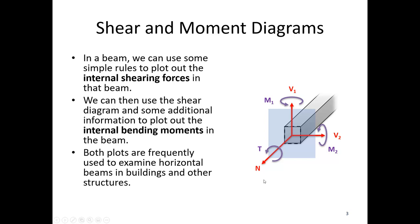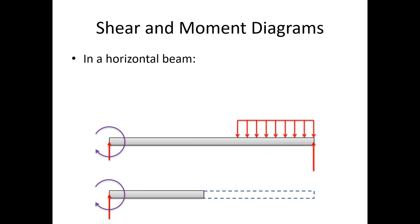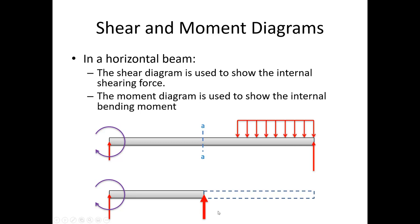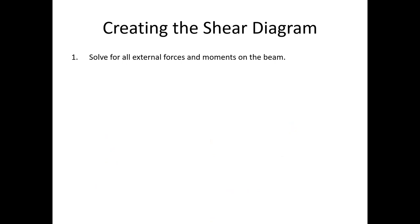Both of these plots are used to examine horizontal beams in buildings and other structures — anywhere you've got horizontal beams like in a floor or a roof you're going to have this analysis. For any horizontal beam with all sorts of loading, if I'm looking at cross-section AA, the shear diagram gives the internal shearing force, and the bending moment diagram gives the internal moment that resists the external loads.